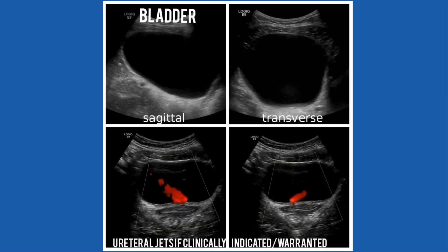For starters, I begin with the bladder. Take sagittal and transverse images, also parasagittal to the right and parasagittal to the left. On the bottom of those two images are the ureteral jets, on the left and right.